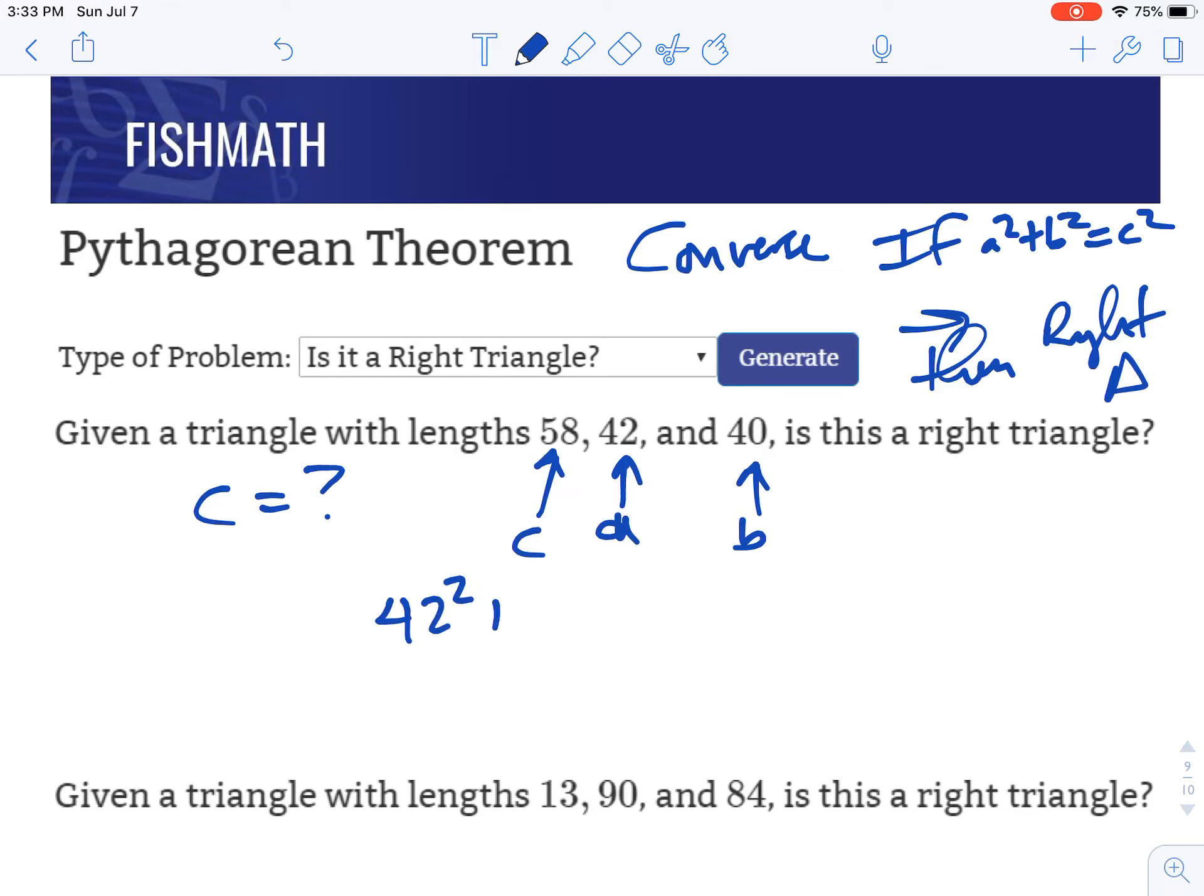So let's do 42 squared plus 40 squared. And let's do 58 squared. And let's see if they are equal. We shouldn't assume they're equal. Let's actually see if they are. So don't put an equal sign yet. Do 42 squared plus 40 squared. We get 3,364. We do 58 squared. And look, there it is. 3,364.